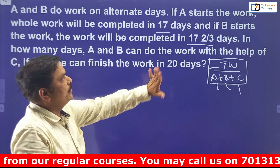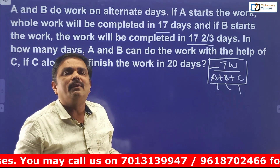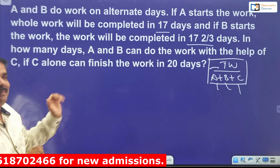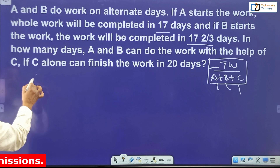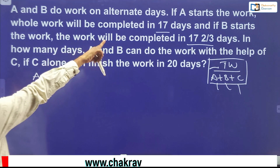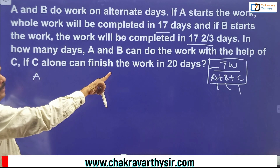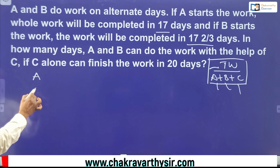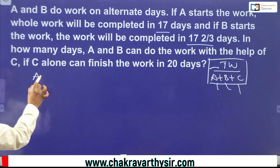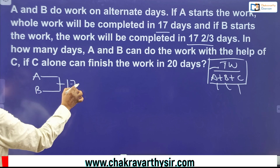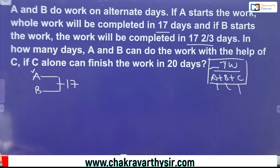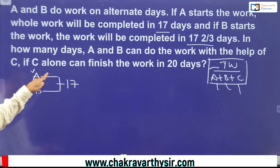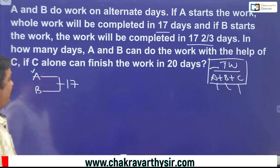Always remember, whenever you come across this type of question, this is the best shortcut. Start by finding the total amount of work. In the first case, the total is completed in 17 days. You can easily determine how many days A worked and how many days B worked using a simple technique: divide 17 by 2 equally — that gives you 8 and 8, with one day remaining.